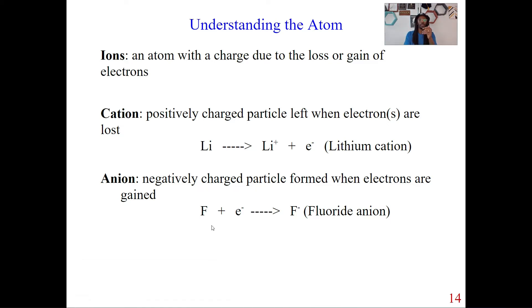So if this atom gains an electron, once it gains that electron, what's going to happen to it? It's going to become an ion. In this case, it becomes an anion, because it's gaining an electron. It's becoming more negative. So this is what we see here with the fluoride anion.